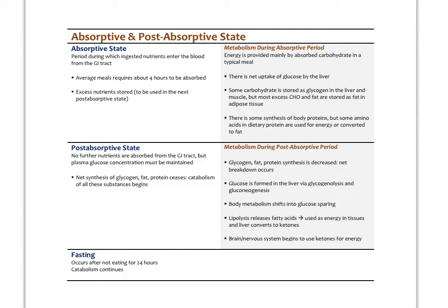Think of the absorptive state as storing and synthesizing storage molecules for that food. Carbohydrates provide most of the energy during that time. The liver takes up glucose, uses some for energy, stores some as glycogen, and adipose tissue takes up glucose and makes more fat through lipogenesis. There's also a little protein synthesis, but that usually happens later.